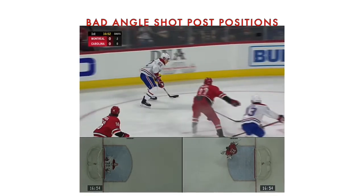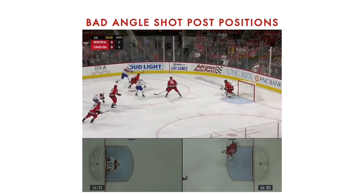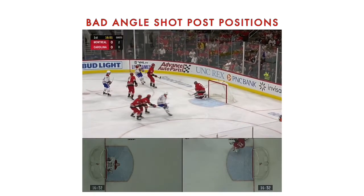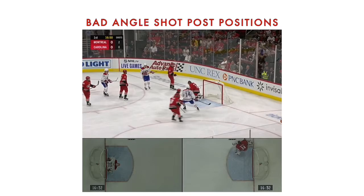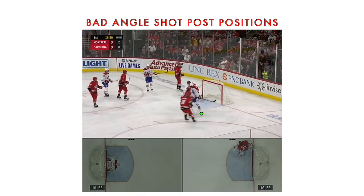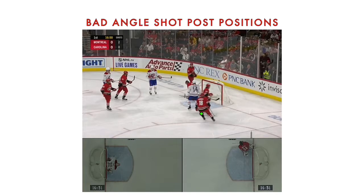The first one is called the overlap. The guy comes down at a bad angle, doesn't have a pass option, and decides to funnel it on net. Mirazic just stays square, follows him down, keeps his depth. It's called the overlap because his skate is overlapped on the post. By overlapping the skate, your hip is perfectly in line with that post, meaning the shooter has nothing to shoot at — you treat it like any other shot. Super easy to learn and super useful.